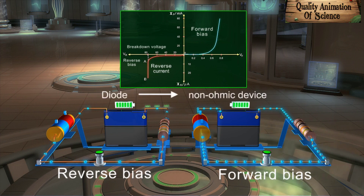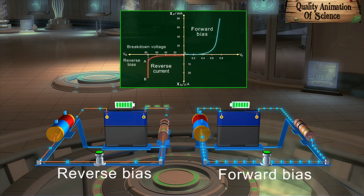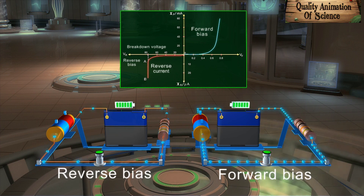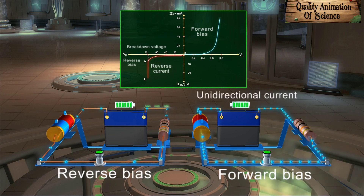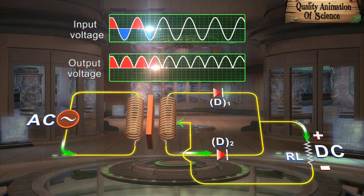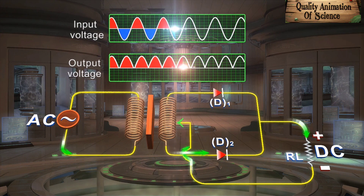You can learn more about this in our next topic: IV characteristics of a PN junction diode. After having studied the working of a PN junction under reverse and forward bias, we know that a diode primarily gives unidirectional current. That is why it is also referred to as a diode valve. This property is used to convert AC into DC.